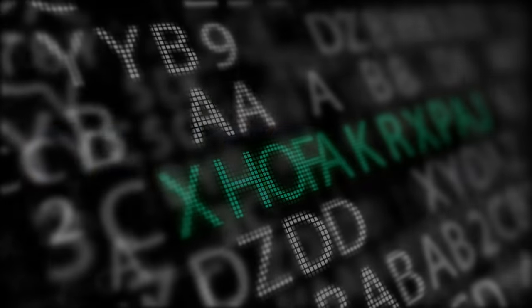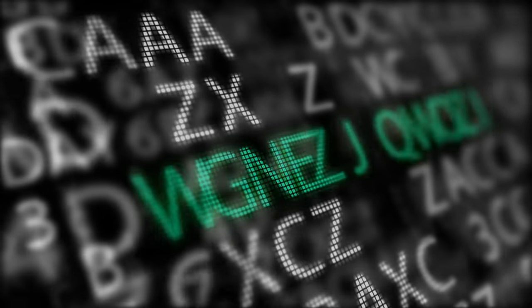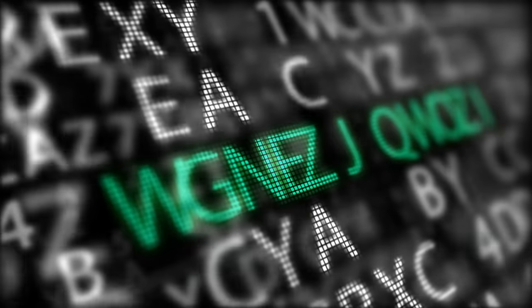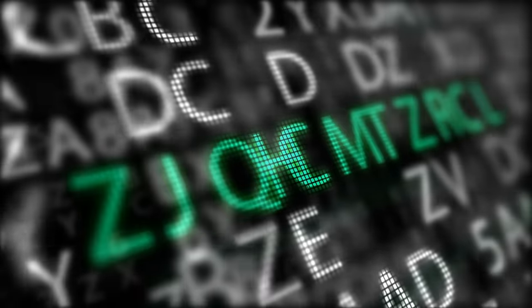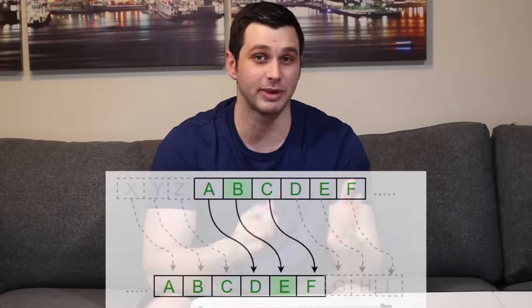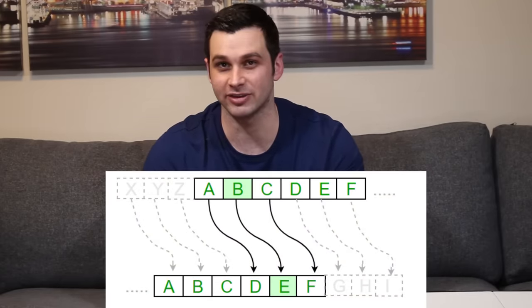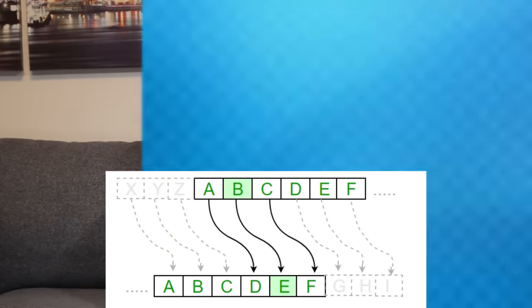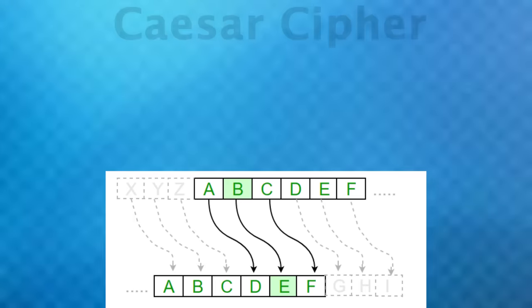If you and I wanted to pass notes in class such that if anyone opened the note they would have no idea what it said, but we could still figure it out, there are several methods for doing this. For example, maybe beforehand we could agree on shifting all the letters by three in order to encrypt our message, otherwise known as the Caesar Cipher.